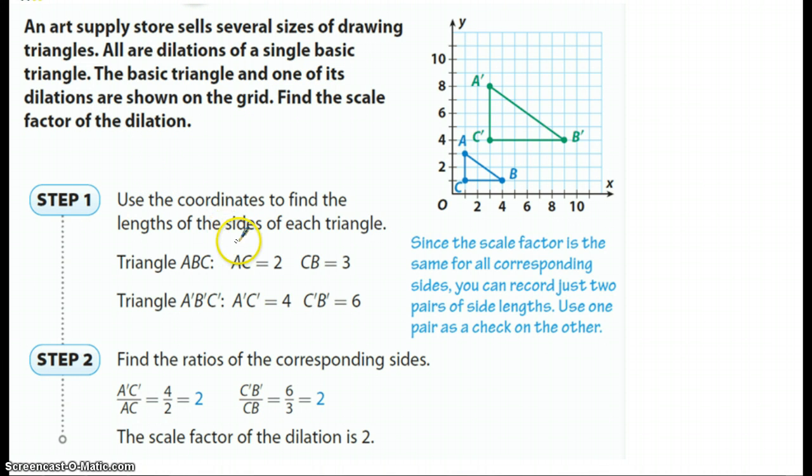So step one says use the coordinates to find the length of the sides of each triangle. So, here's a hint. Let's not worry about this part. Let's just worry about the ones that we can count. So, if I started with triangle ABC, I see from A to C is two units. One, two. So that's exactly two units. So I'm going to put a two there.